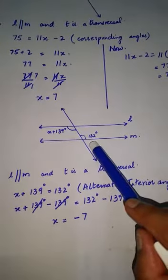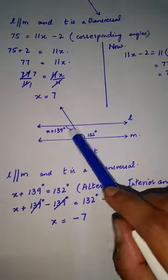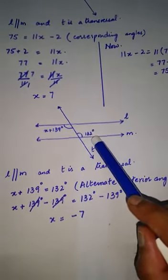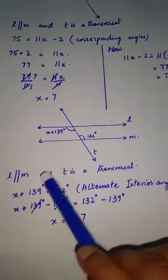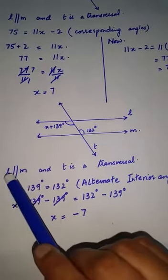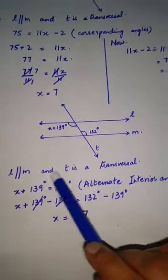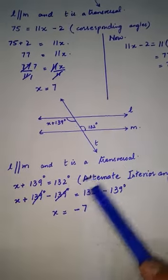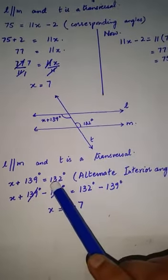opposite sides: x + 139 degrees and the other is 132 degrees. You have to mention with all questions: l is parallel to m and t is a transversal. Then x + 139 equals